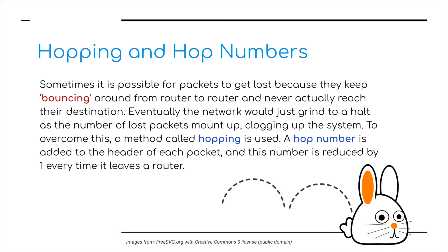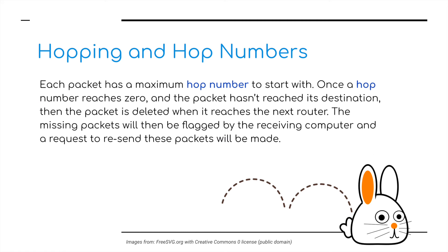The final thing to cover is hopping and hop numbers. Sometimes it is possible for packets to get lost because they keep bouncing around from router to router and never actually reach their destination. Eventually the network will grind to a halt as the number of lost packets mounts up, clogging the system. To overcome this, a method called hopping is used. A hop number is added to the header of each packet and this number is reduced by 1 every time it leaves a router. Each packet has a maximum hop number, predetermined to start with. Once a hop number reaches 0 and the packet hasn't reached its destination, the packet is deleted when it reaches the next router. The missing packet is then flagged by the receiving computer and a request to resend those packets is made straight away.